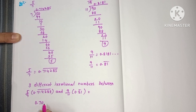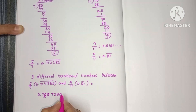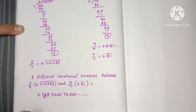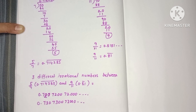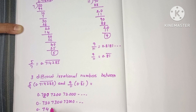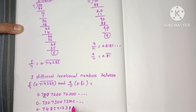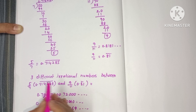Since we need three numbers between 0.714285 and 0.81, we can easily pick: 0.72, 0.73, and 0.74. We can also pick numbers like 0.74857 with a non-repeating pattern. Any three numbers between 0.714285 and 0.81 with no particular repeating pattern will work as rational numbers.